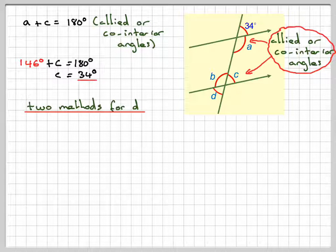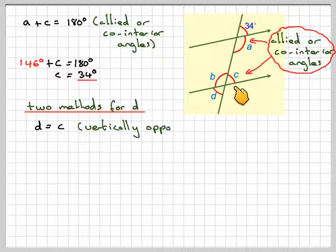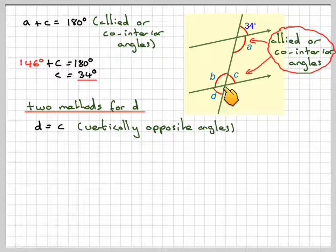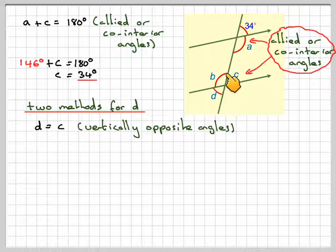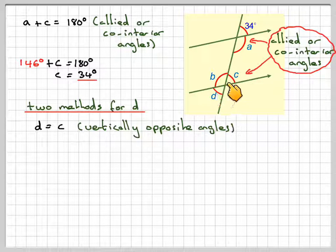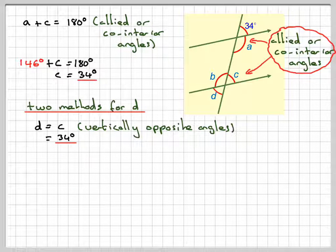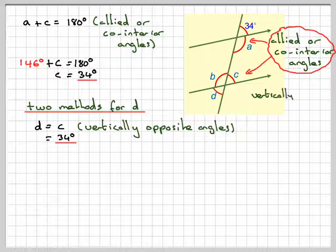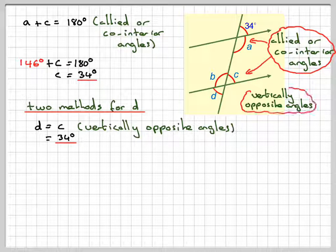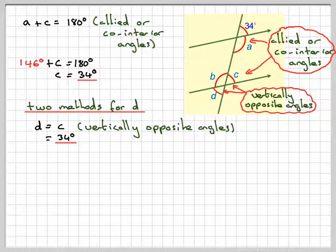Now, for finding D, there are actually two methods. D is actually equal to C because they're what's known as vertically opposite angles. When lines cross like this, opposite angles are actually equal. So we can say straight away that D equals 34.